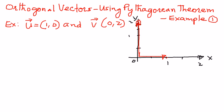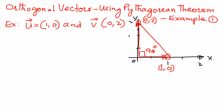So this point here will be 1 comma 0, and then this point here is going to be 0 comma 2. If we were to join these two points, these two vectors are perpendicular to one another. When we draw it out on the graph sheet, we see that those two vectors are perpendicular. But using the theory of orthogonal vectors, we will see whether we can arrive at that same answer.